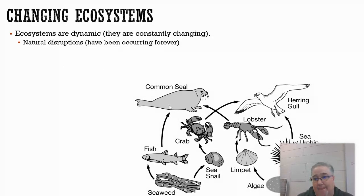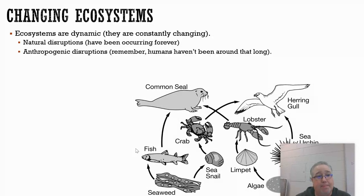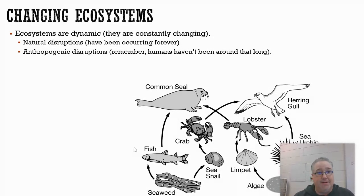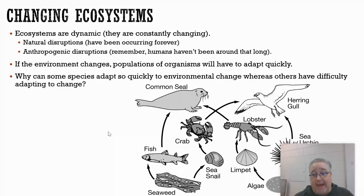Some reasons for environmental change are natural disruptions that have been happening in the tundra forever, like seasonal change — summertime gets a little bit warmer, wintertime gets colder. Those things have been going on for thousands and thousands of years and the organisms that live there are adapted to that. But there are also anthropogenic disruptions — things that haven't really been going on for thousands of years — and some of these anthropogenic things are driving population change a lot more than the natural ones. If the environment changes, whether naturally or anthropogenically, organisms are going to have to adapt quickly.